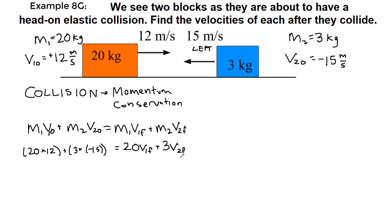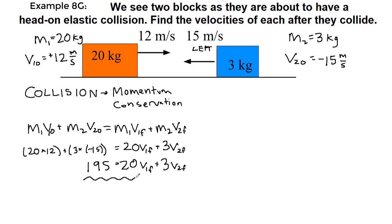On the left side we get 195, and on the right side we have 20·v1_final + 3·v2_final. We now have one equation with two separate unknowns, which means we need a second equation.